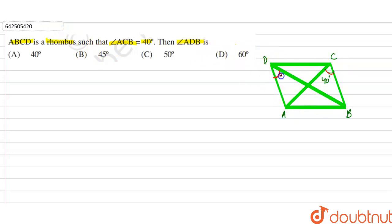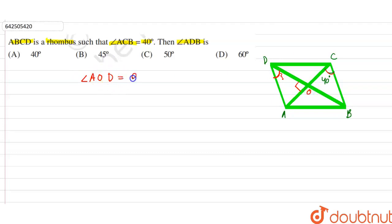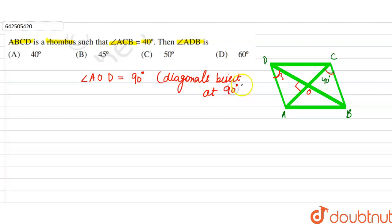We have to find this angle. Now, we know that the diagonals of a rhombus bisect each other at 90 degrees. Let's say the intersection point is O. So we can say that angle AOD is equal to 90 degrees, because the diagonals of a rhombus bisect each other at 90 degrees.